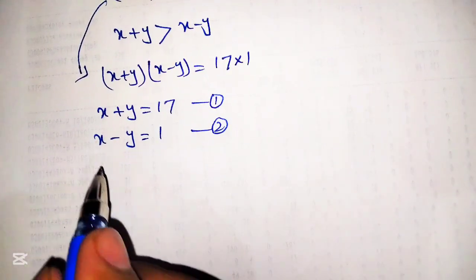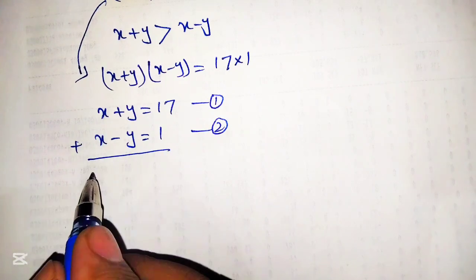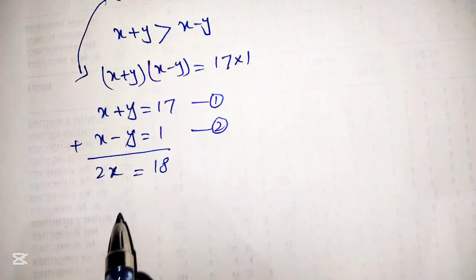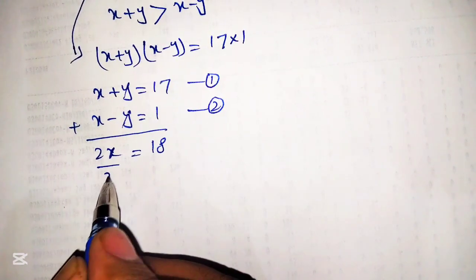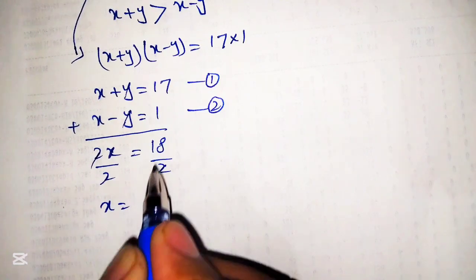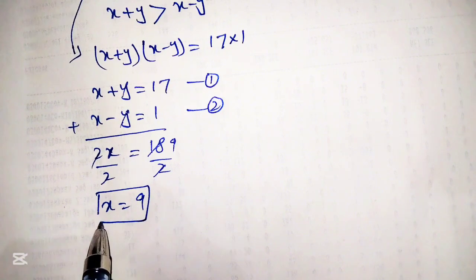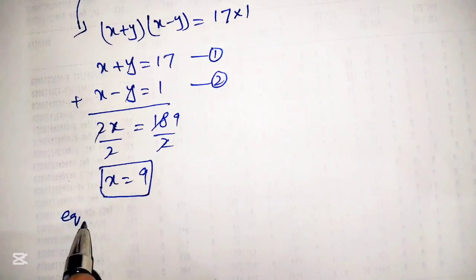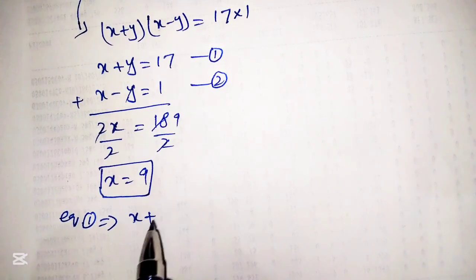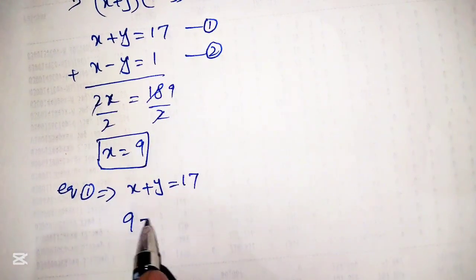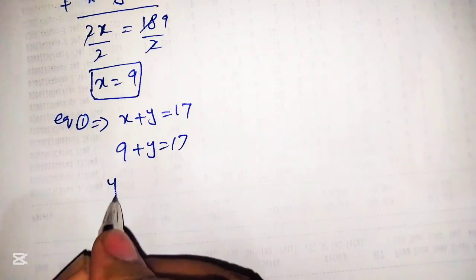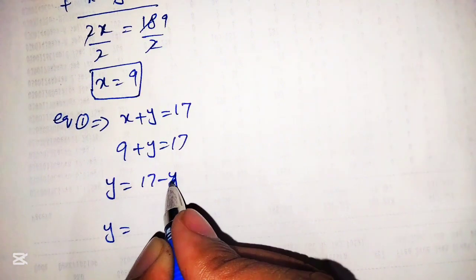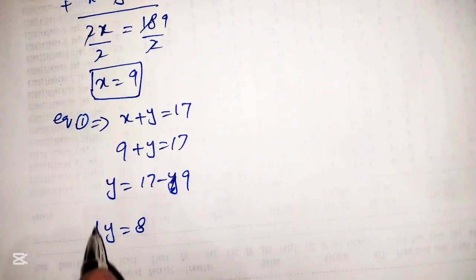To find the values of x and y we add the two equations. Adding gives 2x equals 18, and dividing both sides by 2 we get x equal to 9. To find y we substitute x equals 9 into equation 1: 9 plus y equals 17, so y equals 17 minus 9, which gives y equal to 8.